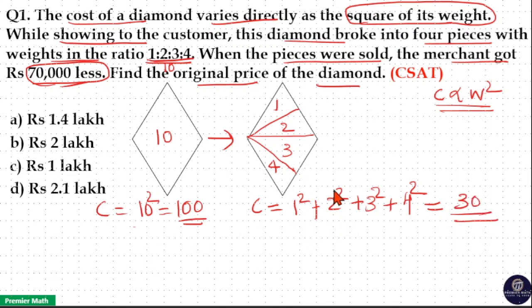That is, cost ratio 100:30. Initially it was 100 units. Finally, these 4 pieces together cost 30 units. Now, the difference between these two ratios is equal to 70 units.